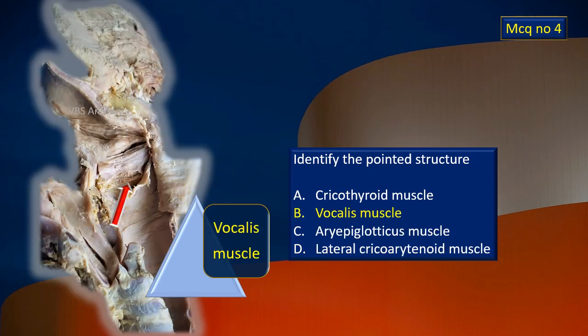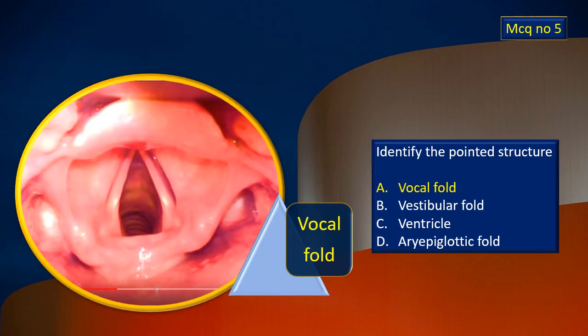MCQ number four: the other half of the same sagittal-cut larynx is taken. We identified an area of mucosa immediately below the vocal cord and reflected the mucosa. We also reflected the conus elasticus immediately deep to it, and a muscle is visible deep to it — that muscle is the vocalis muscle. Remember, it is immediately below the vocal cord. MCQ number five: this is direct photography roughly from the nasopharynx. The pearly white structure with a sharp edge is the vocal cord.